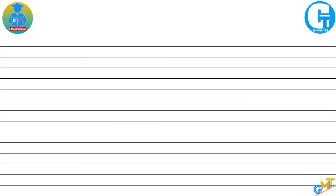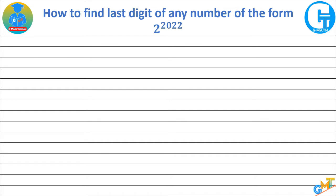Welcome to GMath. Today's problem is how to find the last digit of any number of the form 2 raised to 2022, or any number of the form a raised to b.